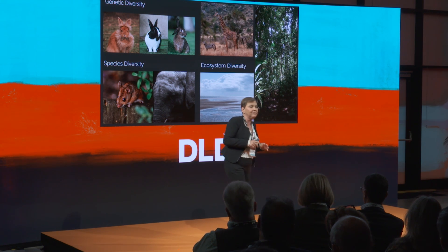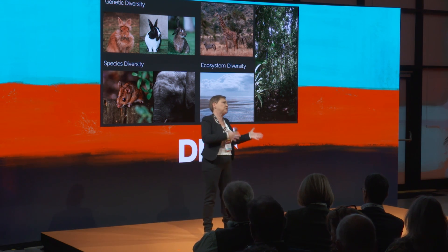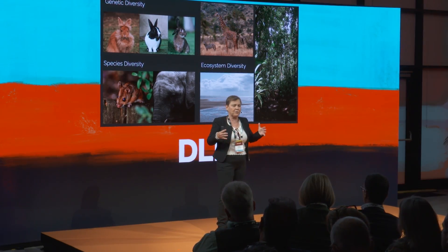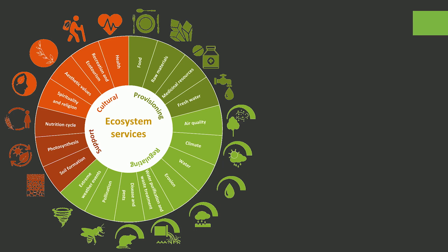Species are not evenly distributed over our planet. Certain species assemblages can be found at certain sites, and there they are connected with each other over sometimes very complex processes. This combination — a species assemblage with the processes that connect them at a certain site — is called an ecosystem.